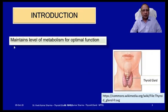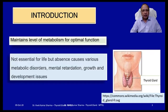Introduction. The thyroid gland maintains the level of the metabolism for optimal functioning. Although the thyroid gland is not essential for life, its absence causes various types of metabolic disorders, mental retardation, and growth and development issues. The thyroid gland is placed in the front of the neck and has two lobes — the right and the left lobe — which are connected together by the isthmus.